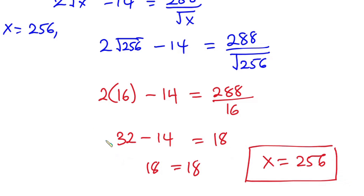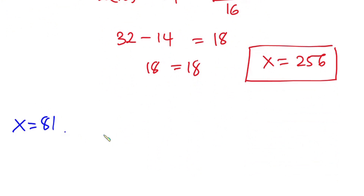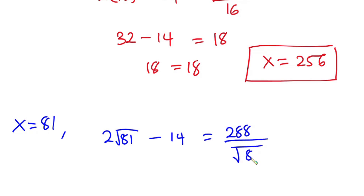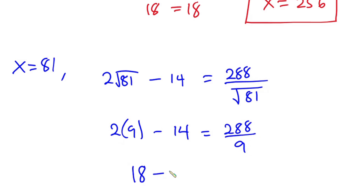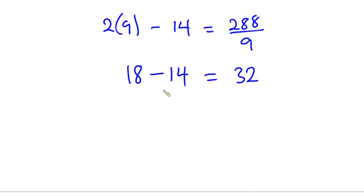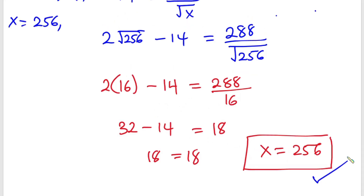Now let's test x equals 81. We have 2 times square root of 81 minus 14 equals 288 over square root of 81. Square root of 81 is 9, so 2 times 9 is 18, minus 14 equals 4. And 288 divided by 9 is 32. Since 4 is never equal to 32, x equals 81 is not a valid solution. So the final answer is x equals 256.